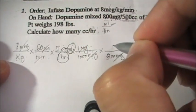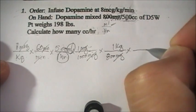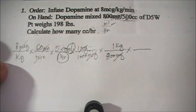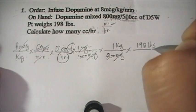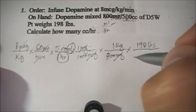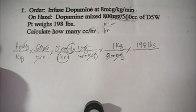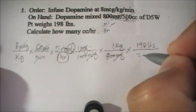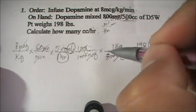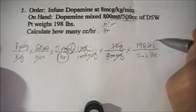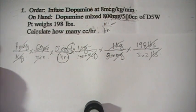To cancel kilograms, we place 1 kilogram in the numerator. The patient's weight is 198 pounds, so we put 198 pounds in the numerator as well. Since 1 kilogram equals 2.2 pounds, we put 2.2 pounds in the denominator. Now kilograms cancel with kilograms, and pounds cancel with pounds.